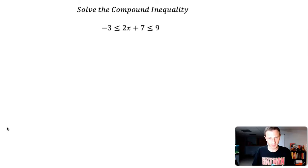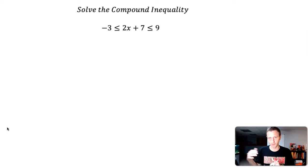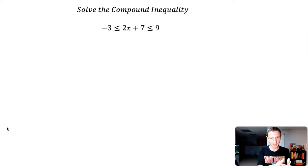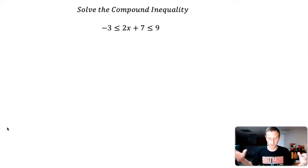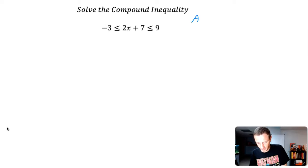When we're looking at this type of compound inequality, we want to know: is it an 'and' scenario or is it an 'or' scenario? In my solution, am I looking for the overlap in potential solution sets, or just any potential solution? In this one it's 'and' — when we have a compound inequality like this, it's 'and'.